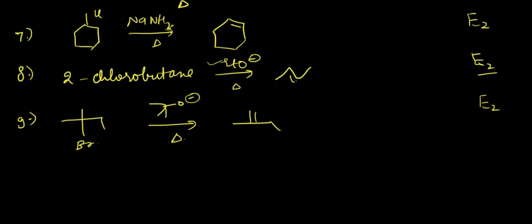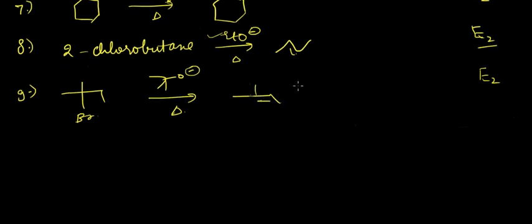A correction: in the previous example, the double bond character is here, not there, because we need to identify the major compound — that would be the Hofmann product. But in this case, the major product is actually the Zaitsev product because of the large bulky group present.